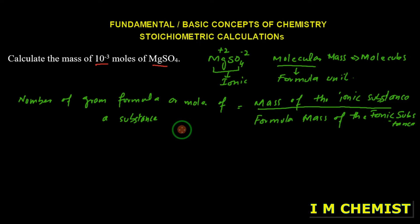First of all, we are going to find out the formula mass for magnesium sulfate. As we know, the atomic mass for magnesium is 24, for sulfur is 32, and oxygen is 16. Now that is 4 multiplied by 16.